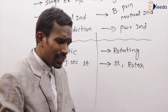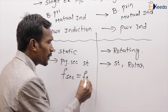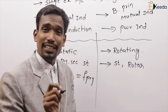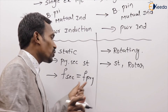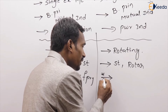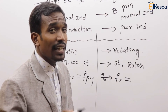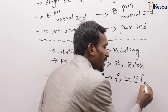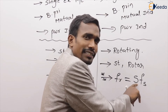Another difference: in the transformer, the frequency in the secondary circuit is exactly equal to the frequency in the primary circuit — that is why it is called a constant frequency device. Whereas in the induction machine, the rotor frequency is not equal to the stator frequency; instead, rotor frequency equals slip times the stator frequency.